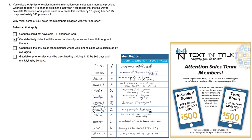Choice C: Gabrielle is the only sales team member whose April phone sales were calculated by averaging. While it's true that Gabrielle's April amount was averaged based on her yearly total, other sales people also have averaged figures. For example, Ainsley's data is based on the last 60 days — we don't even know exactly how many she sold in April; perhaps she sold zero. So Gabrielle is not the only one, and Choice C does not apply.